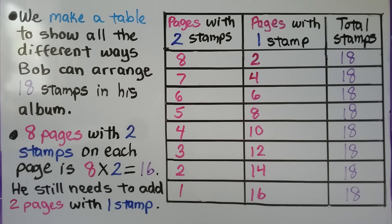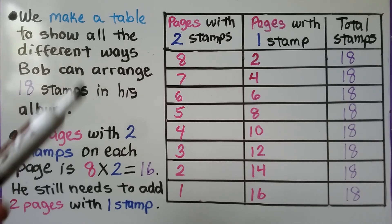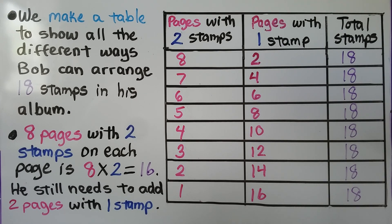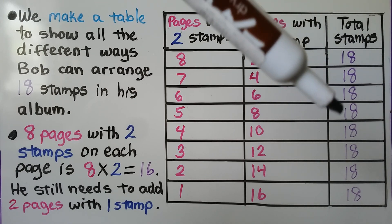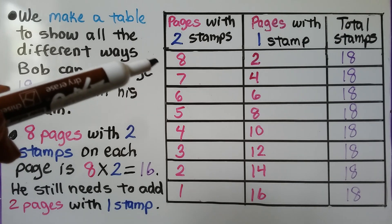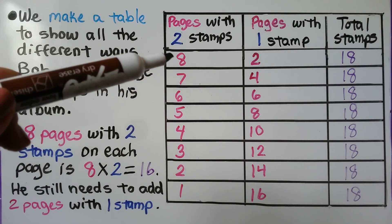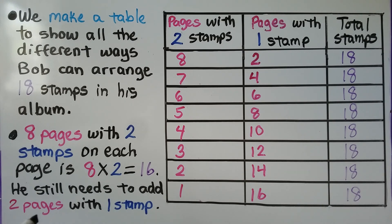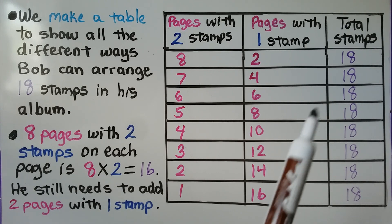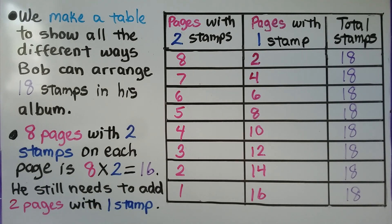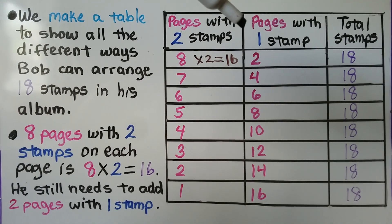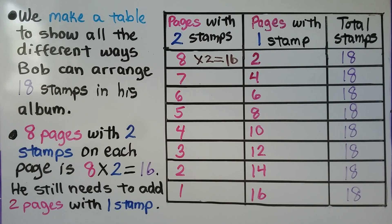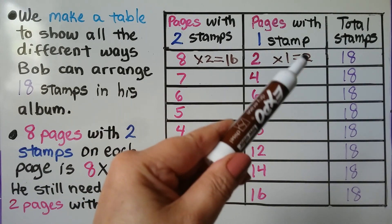We make a table to show all the different ways Bob can arrange 18 stamps in his album. We have pages with two stamps on them and pages with one stamp on them, and they need to total 18 stamps. So our total column has 18 going all the way down. If he puts two stamps on eight pages, that means we have eight times two, which is equal to 16. He still needs to add two pages with one stamp in order to have a total of 18. That's two times one, which is equal to two. We can add the 16 plus two, and it equals 18.